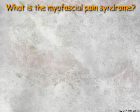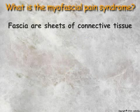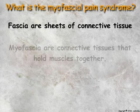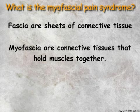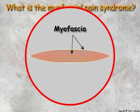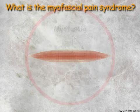What is the myofascial pain syndrome? Fascia are sheets of connective tissue that hold our tissues and organs together. Myofascia are connective tissues that hold muscles together. Here is a muscle — the overlying fascia that surrounds the muscle is now demonstrated by highlight. The muscle has two more internal fascia as well that will be illustrated later.